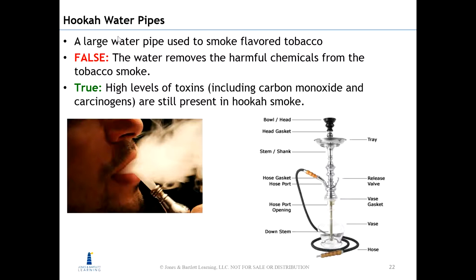Now we're going to talk about hookah, also known as water pipes — a large water pipe used to smoke flavored tobacco. Looking at the diagram: at the very top is the bowl, below that is a tray to catch ash from the charcoals used to heat the tobacco. The stem connects the tobacco in the bowl down to the water in the vase. At the very bottom is the hose, which is where the smoker inhales.